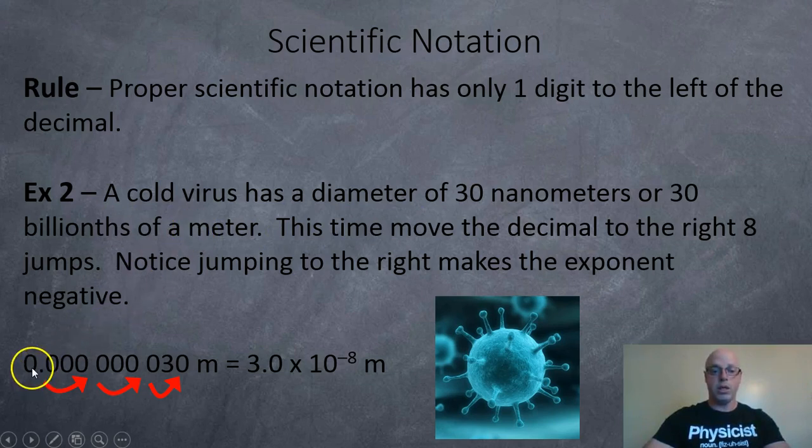So when we write that in standard notation, the 3 is going to be way over here in the 8th decimal place. And we've got to move the decimal over 3, 6, 8 jumps. And so in that case, in scientific notation, it's 3.0 times 10 to the negative 8 meters.